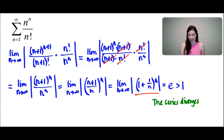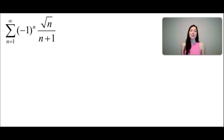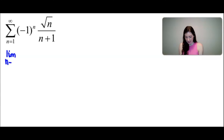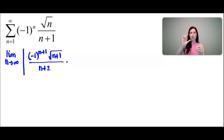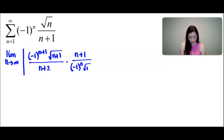Let's look at one last case. In this third example, let's use the ratio test to determine whether this series converges, diverges, or whether the ratio test is inconclusive. We take the limit as n approaches infinity of the a_(n+1) term — that's the absolute value of (-1)^(n+1) times √(n+1) all over (n+2). And it's divided by the a_n term, but I'm going to multiply by the reciprocal: times (n+1) divided by [(-1)^n times √n].